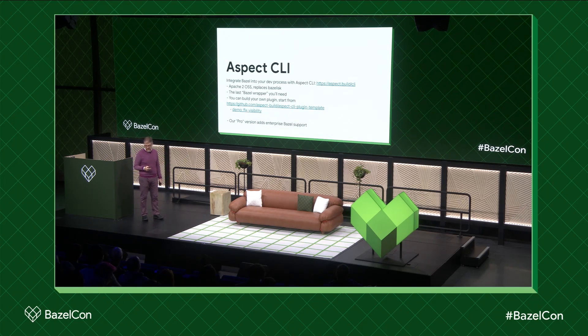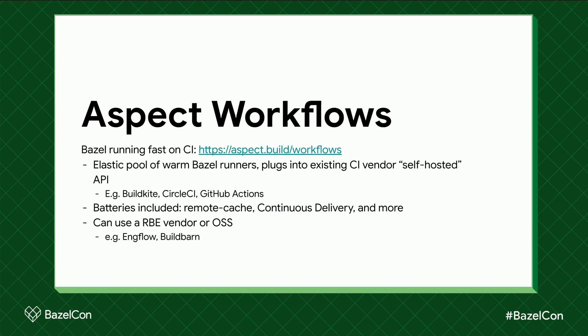We also have a pro version because we need to be able to pay salaries to our engineers. The second thing I want to talk about is Aspect Workflows. Running Bazel on CI is hard. The fundamental observation is that all CI systems are built around the idea that the tool you're running doesn't benefit from incrementality, so the best thing to do is always have an ephemeral cold runner come up — or a container under Kubernetes — that does the build and then is completely destroyed to prevent test isolation failures. That's the opposite of what you want with Bazel, so you need always-warm runners ready to go.